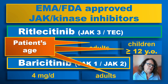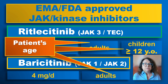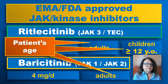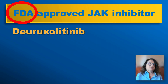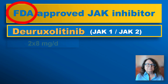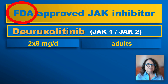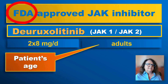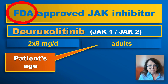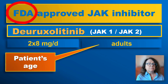The patient's age is one of the factors that decides which JAK inhibitor we use. If it is a child between 12 and 18 years old, then we will definitely use ritlecitinib. If it is an adult, we can choose between ritlecitinib and baricitinib. There is a third JAK inhibitor recently approved: deuruxolitinib. It is approved for adults at a dose of 2 × 8 mg per day — so two tablets per day. At the moment I record this video, it is not available in the United States even though approved, but it should be available very soon. In other countries, this will probably be somewhat later. The approval is for adults only.